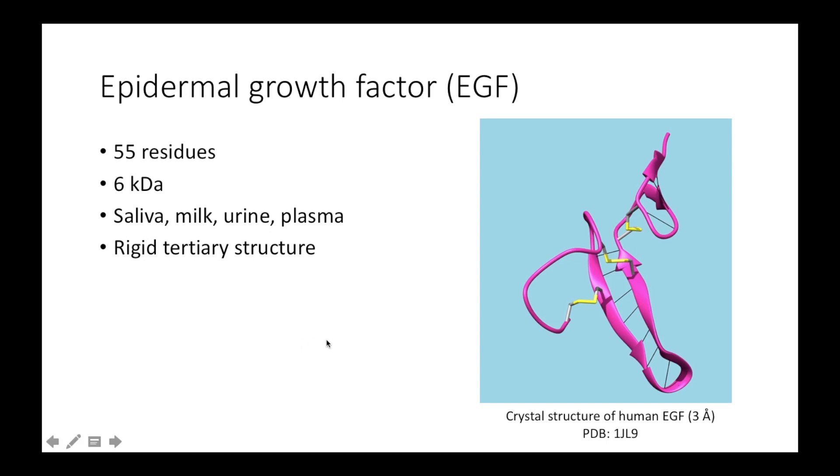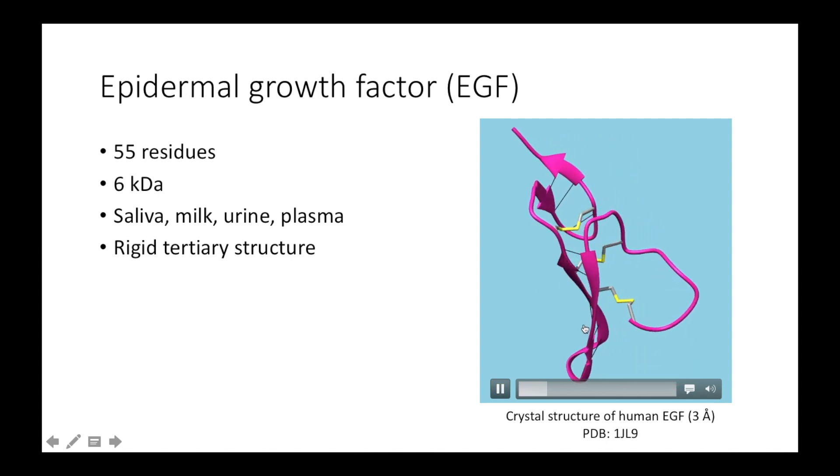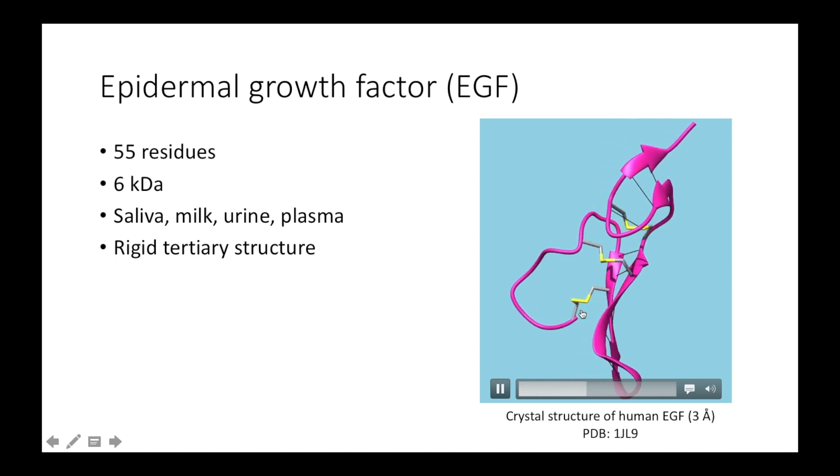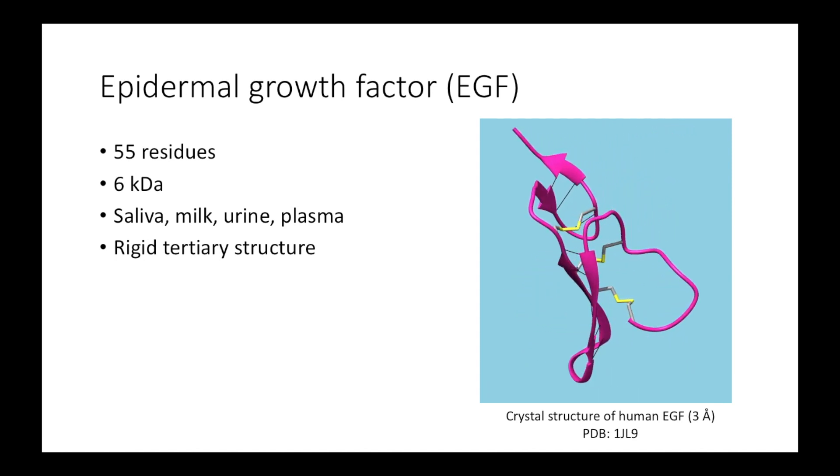EGF itself is a small peptide hormone that can be found throughout the body. It has rigid tertiary structure influenced by three disulfide bonds and two anti-parallel beta sheets. We will see later how this structural rigidity influences the way it binds to EGFR.